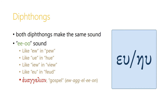There are two vowel combinations — epsilon-upsilon or eta-upsilon — which both make the same sound. This is an 'eu' sound, like in 'pew', 'hue', 'view', or 'feud'. The most common word in the New Testament that uses this combination is the word 'euangelion', which means 'gospel' or 'good news', and the epsilon-upsilon at the beginning there is pronounced 'eu'.